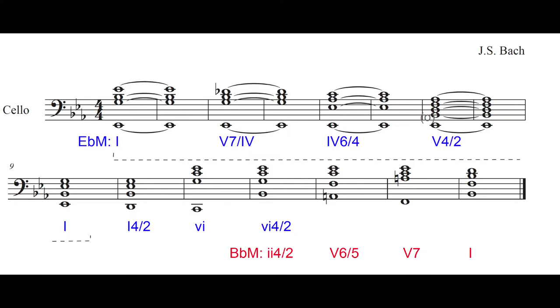So starting with two bars of our tonic E-flat major, two bars of V7/IV, resolving to ii6/4, and on to a V4/2 with that pedal E-flat. Back to a I, and moving down—dragged down even more profoundly—to a I4/2, and then a vi minor chord.